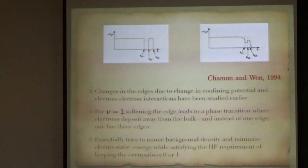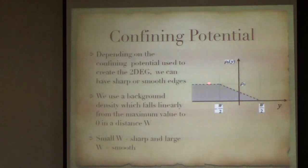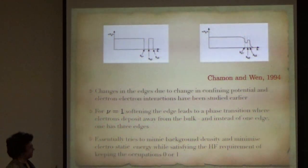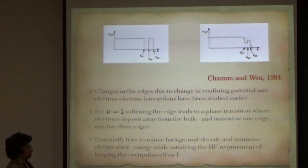The reason being that the electron, this is the background charge, positive charge density, and the electron density tries to mimic that, and minimize the electrostatic energy, while it still had to satisfy the Hartree-Fock requirement of keeping the occupations of 0 or 1.